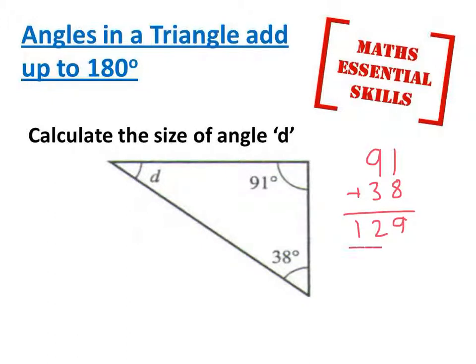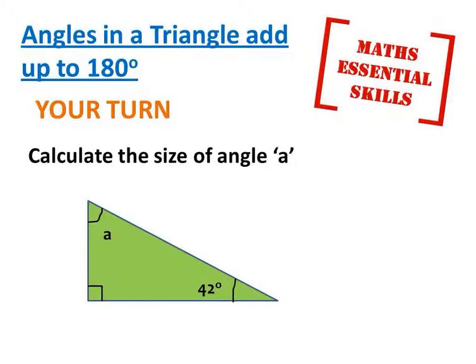129. Now because they should add up to 180, I can now subtract that from 180 to work out my answer. So angle d is 51 degrees. Try working out the size of angle a here. Watch out on